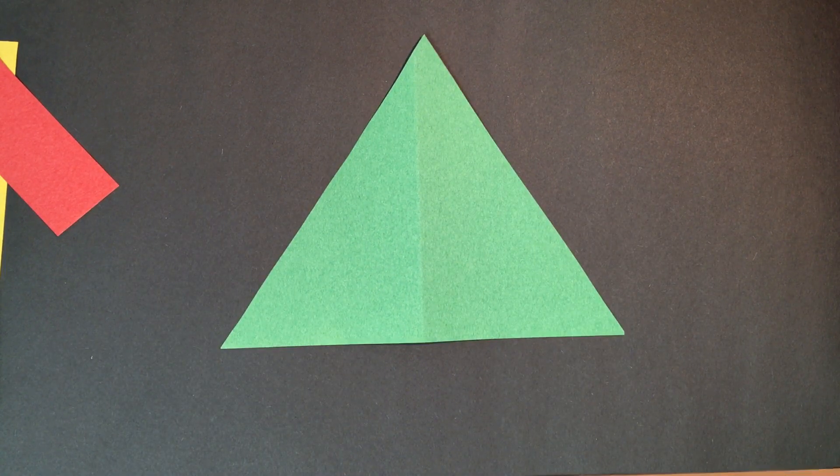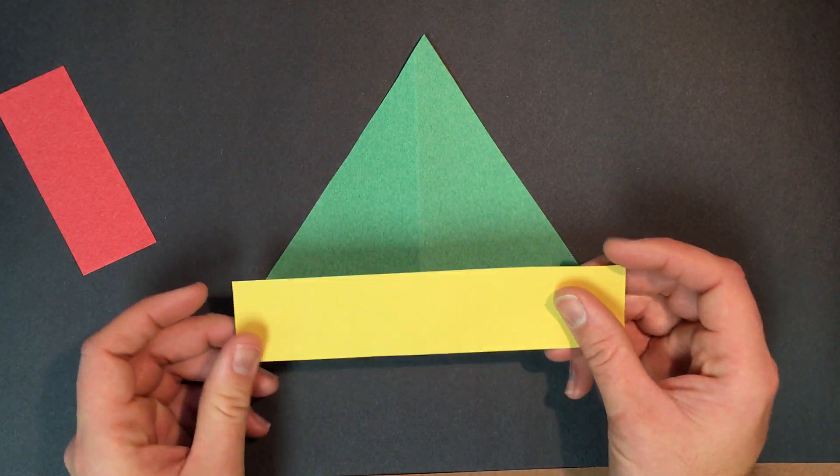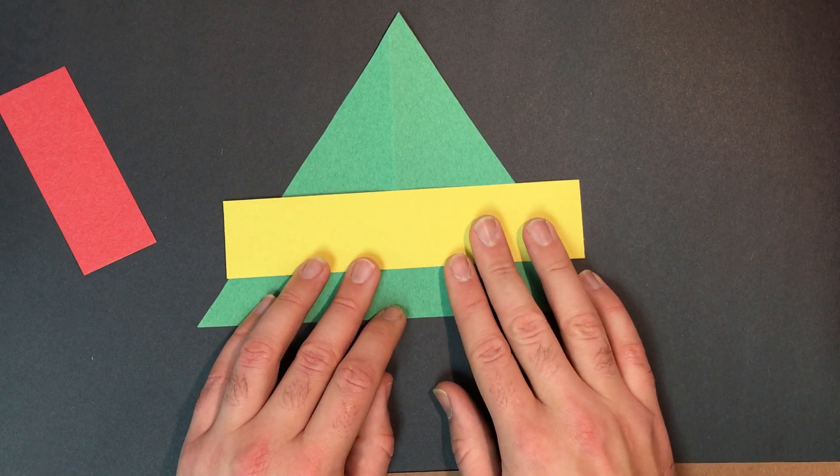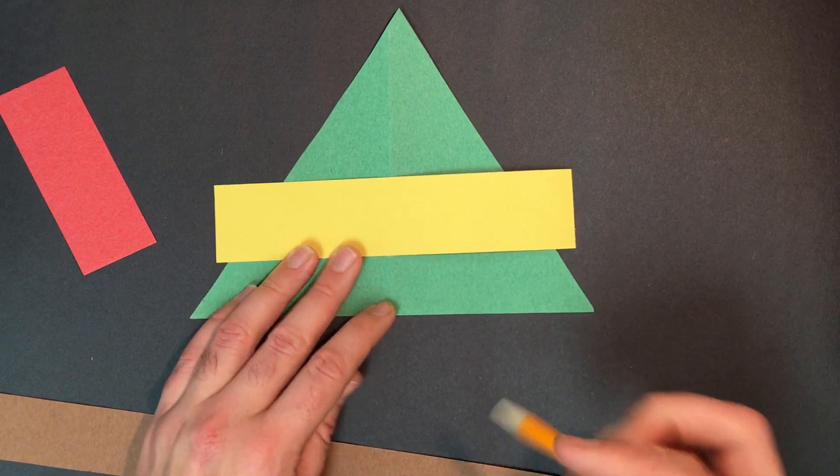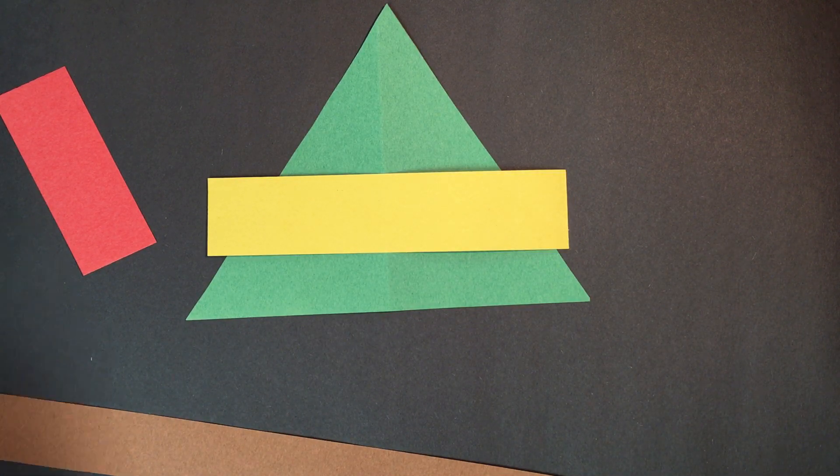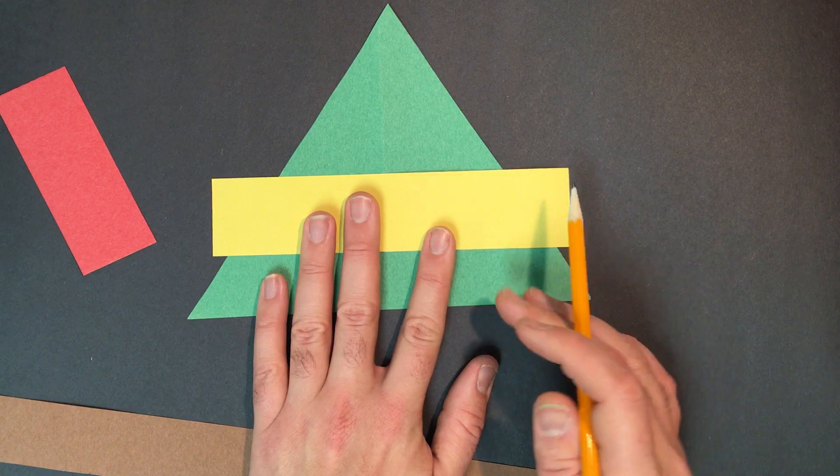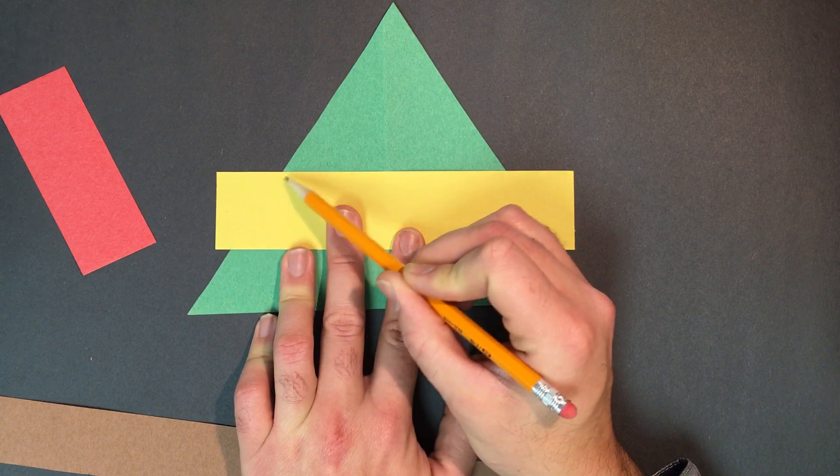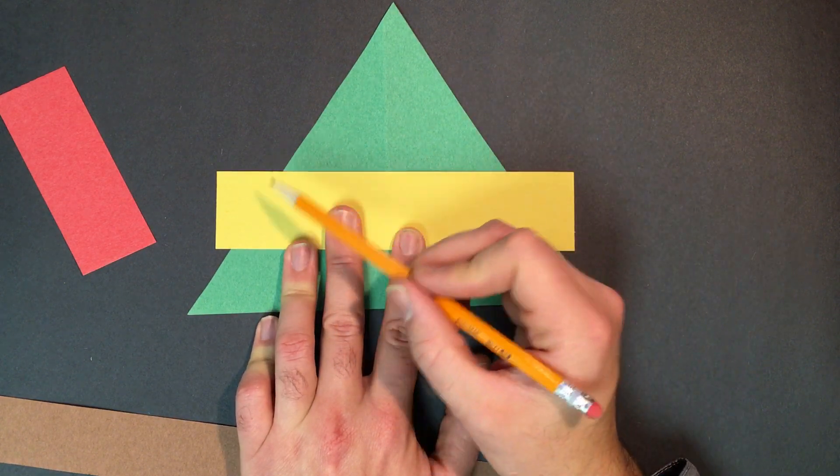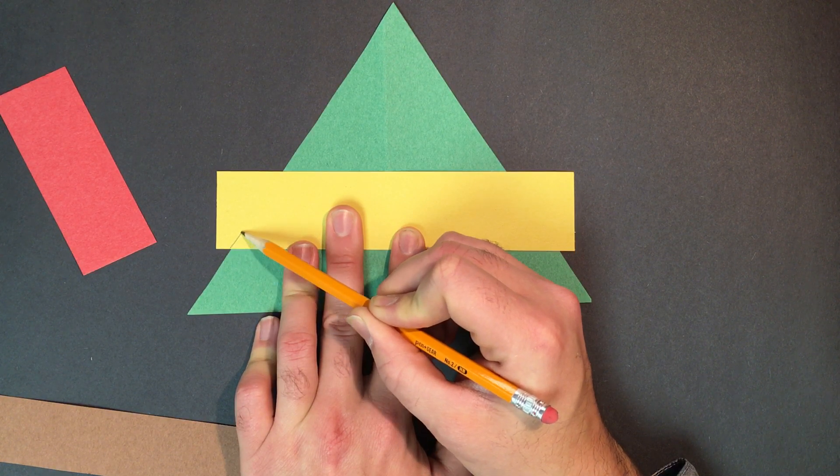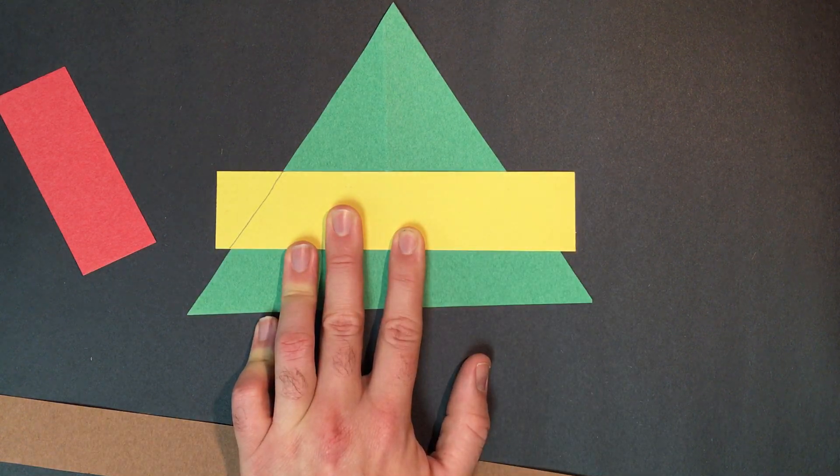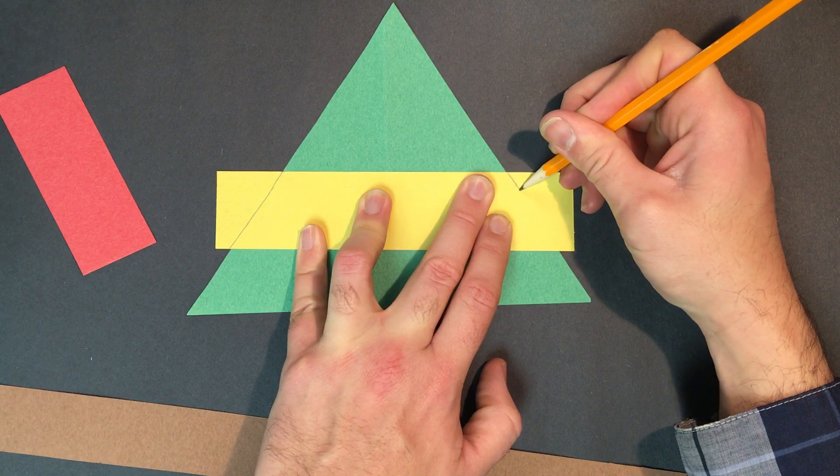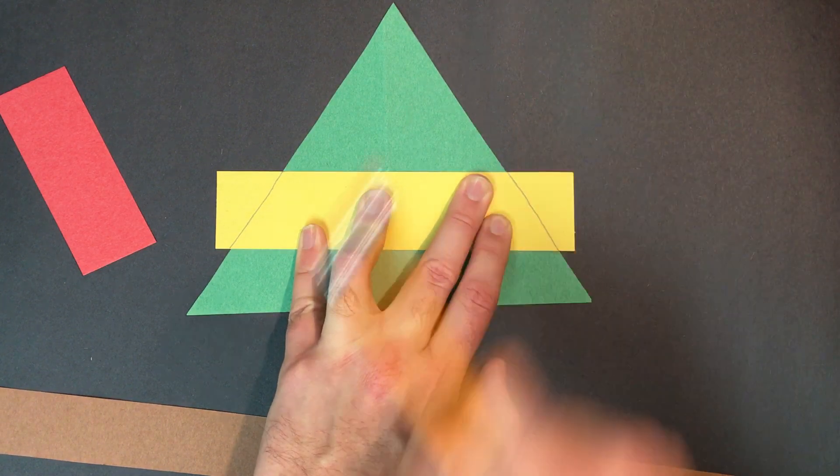Alright, now that we have our triangle shape, now what we're gonna do is we're gonna take our yellow band. And we are going to hover it over our hat here and you want it to be about that high. Once you've got it about that high, what we're gonna do is we're going to draw the line here as though we can see through the paper. So for example, I'm gonna draw a line right here. So starting where the green starts, I'm gonna draw a line that meets it right there. And I'm gonna do the same thing on the yellow band over here. I'm gonna draw a line to connect to the green part right there.